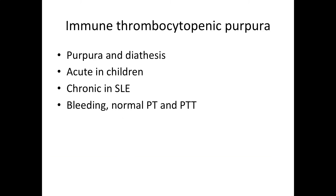ITP is immune thrombocytopenic purpura. Purpura is when the bleeding is more than 3 millimeters in diameter, and petechiae refers to bleeding of unknown origin — these are two signs usually seen in ITP. There are two categories: acute, which is usually in children, most likely after a viral respiratory infection; and chronic in adults, especially females with SLE. Characteristically, you will see prolonged bleeding, but PT and PTT are normal because the clotting factors are not affected.